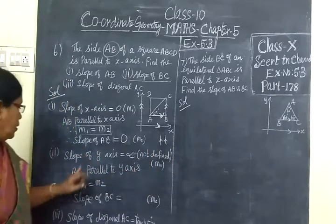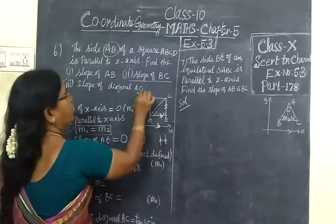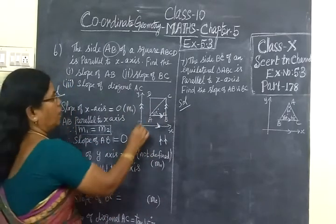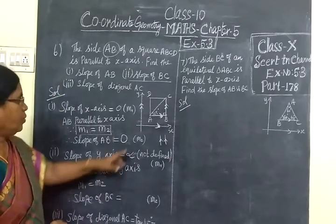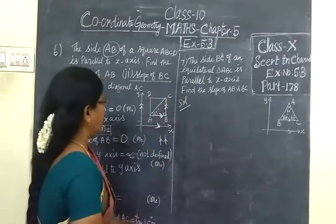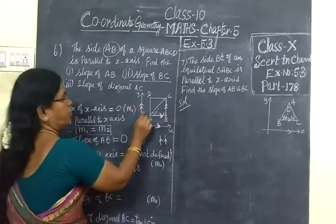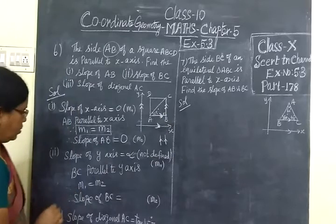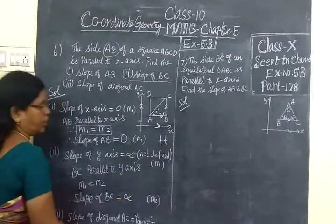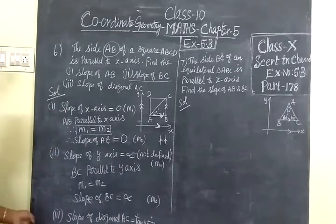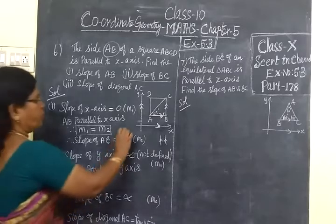That is all. The second one. BC is Y axis parallel. Now, Y axis slope is infinity. It is not defined. BC slope is infinity. Since those two are parallel, M1 equal to infinity, M2 also equal to infinity. That means not defined. So second one, first one over. First one answer 0, second one answer infinity.